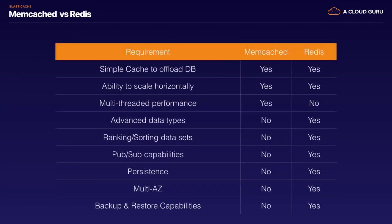If you just want a really simple cache to offload your database, then you definitely want to use Memcached. It's able to scale horizontally and you get multi-threaded performance.